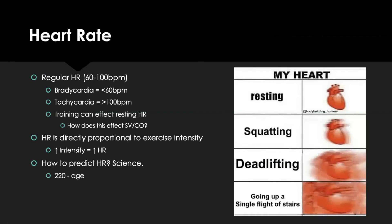Resting heart rate is between 60 and 100 beats per minute. Below 60 is bradycardia; above 100 is tachycardia. Training can affect resting heart rate: as the heart gets stronger, stroke volume increases, so you don't need as high a heart rate to maintain the same cardiac output. In summary: increased strength leads to increased stroke volume, decreased heart rate, and maintained cardiac output.